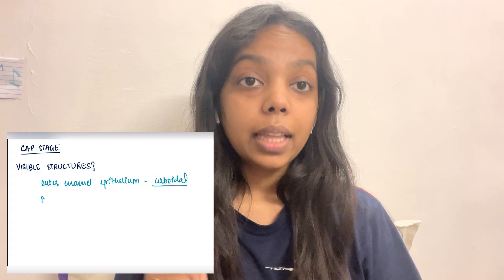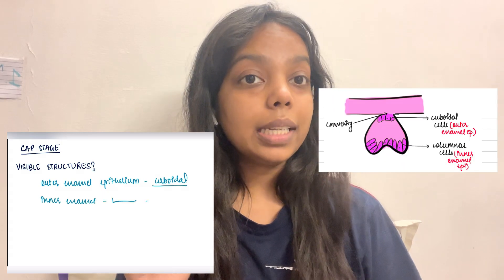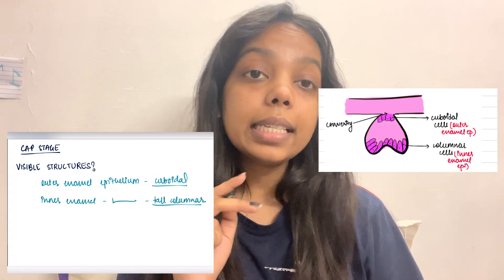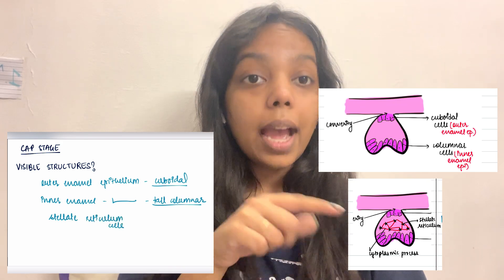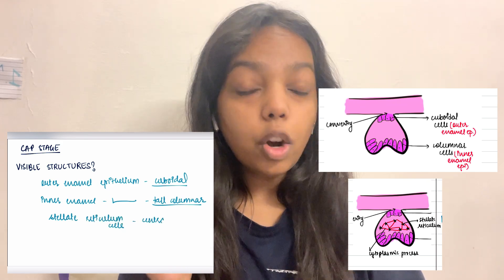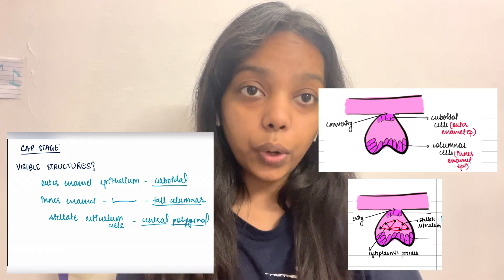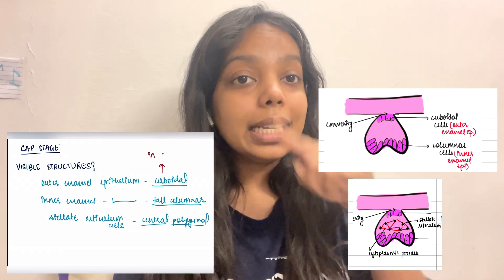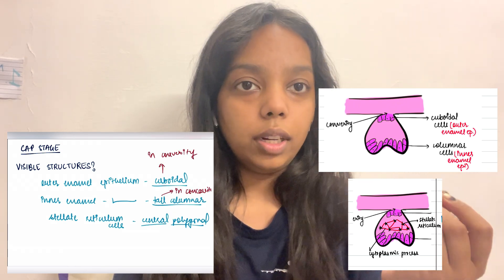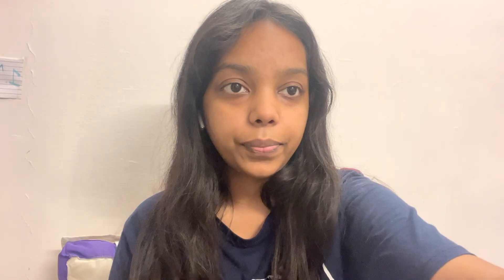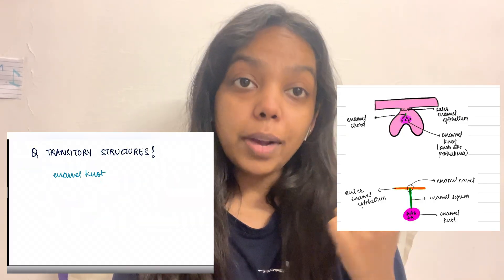First is the outer enamel epithelium, which is cuboidal in shape and present at the convexity. Next is the inner enamel epithelium, which is present at the concavity and is columnar or tall columnar in shape. The next is the stellate reticulum, which is present in the center and is star or polygonal shaped.